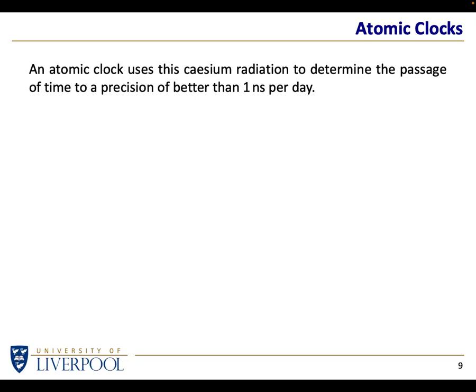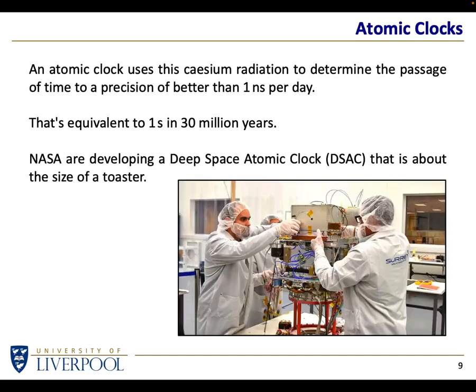The precision you can get with these atomic clocks is better than one nanosecond — one billionth of a second — per day per 86,400 seconds. It's equivalent to saying if you started two clocks and kept track of whether they're drifting, you wouldn't expect them to drift more than about one second in 30 million years. That gives you an idea of the accuracy of clocks today.